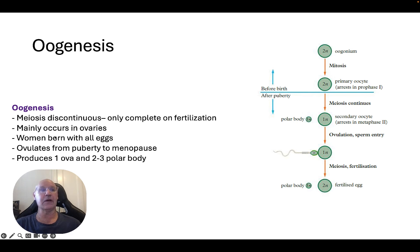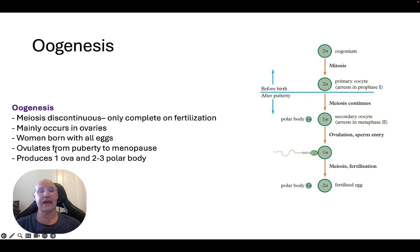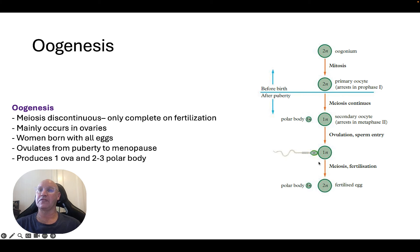Oogenesis occurs mainly in the ovaries, because the final part of it occurs in the fallopian tube or in the uterus. Women are born with all of their eggs, and ovulation starts at puberty and ceases at menopause. Importantly, we only get one ovum from this process of meiosis, along with two or three polar bodies.